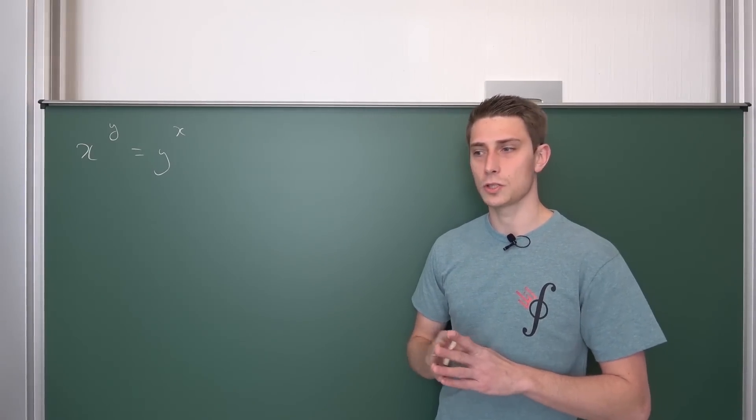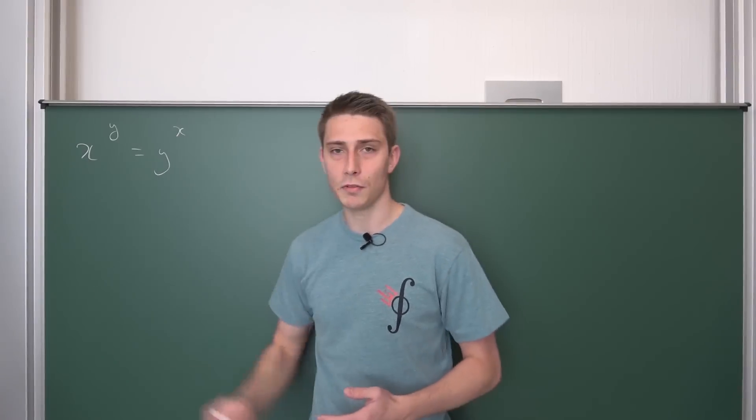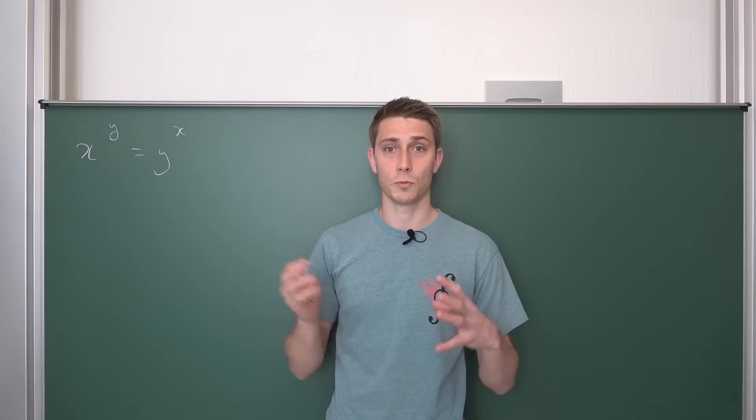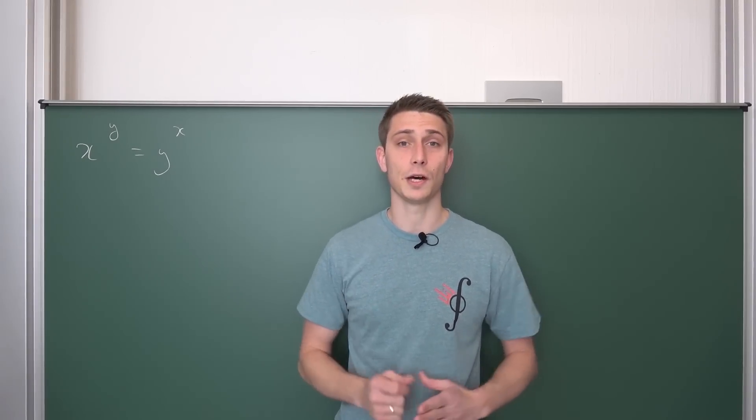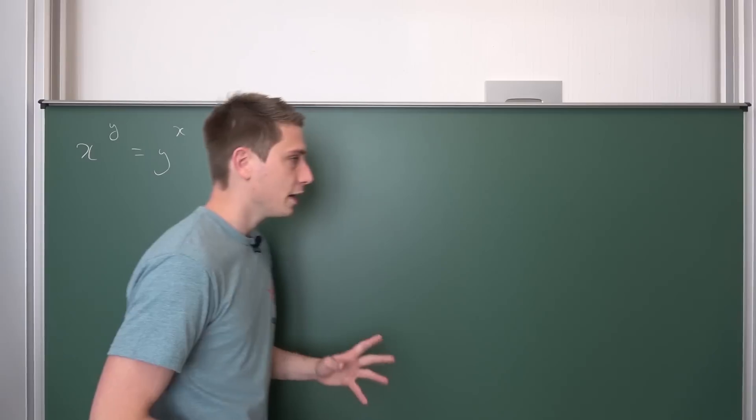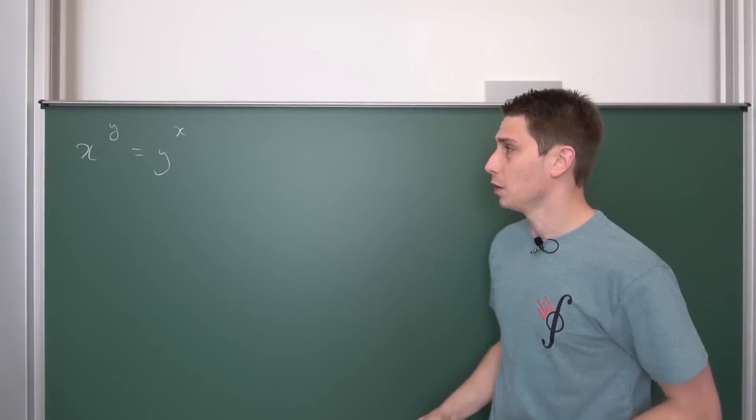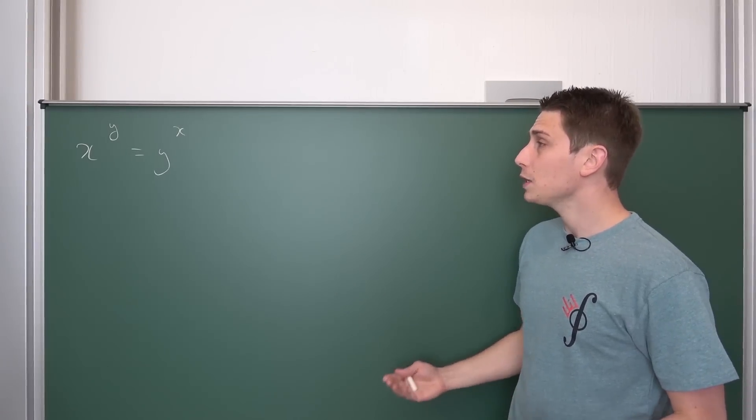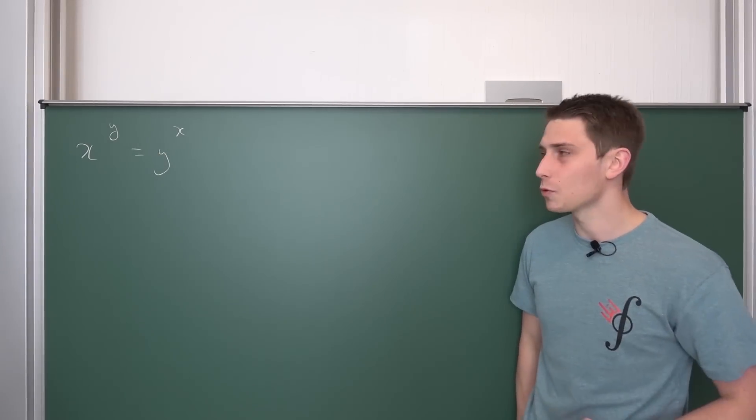If you were to type this into WolframAlpha, it's going to spit you something out with some weird W function. This Lambert W function, links for reference will be down there at the top of the description. At first, I would like to solve a little bit for one variable right now. We are going to take the y-th root on both sides, the 1 over y-th power.